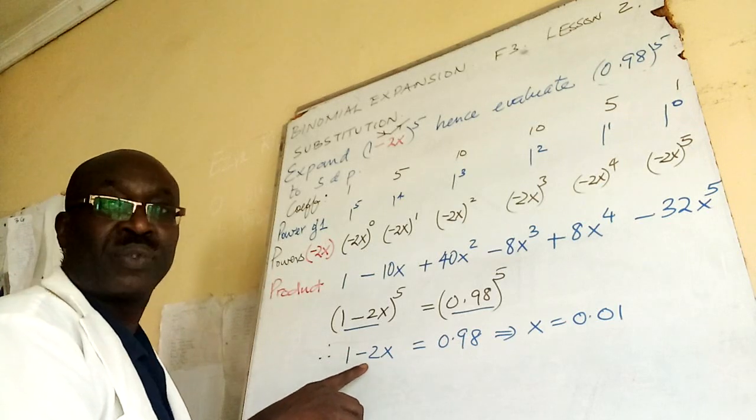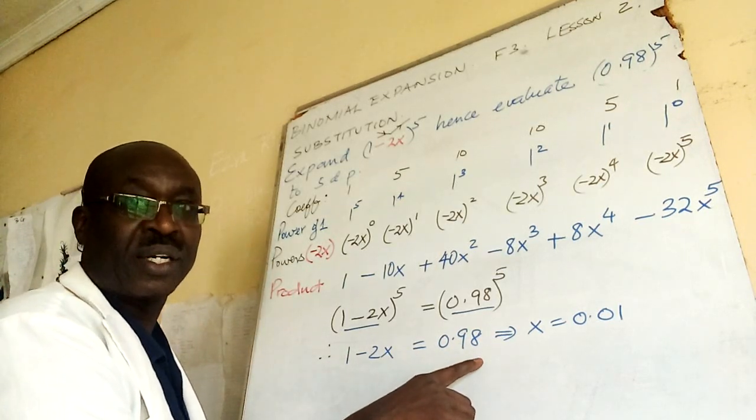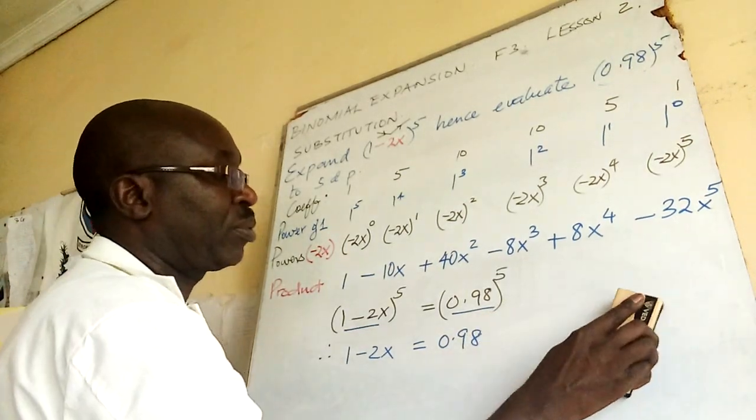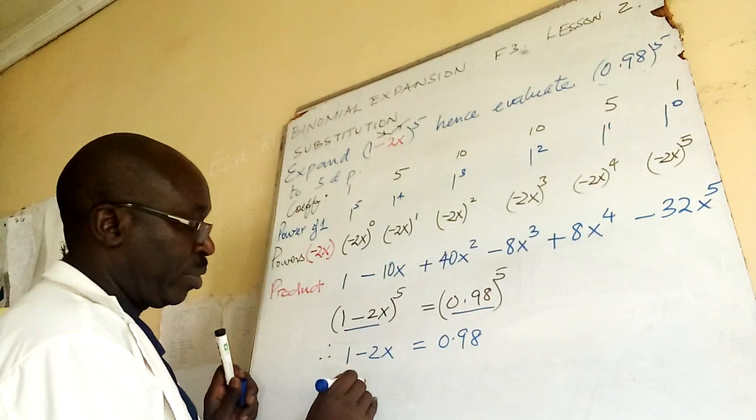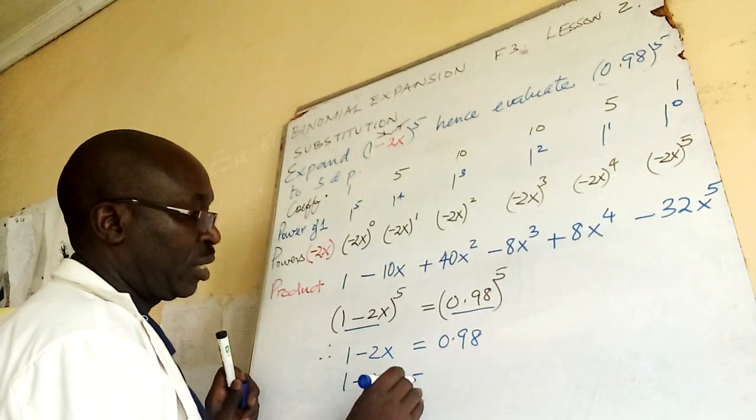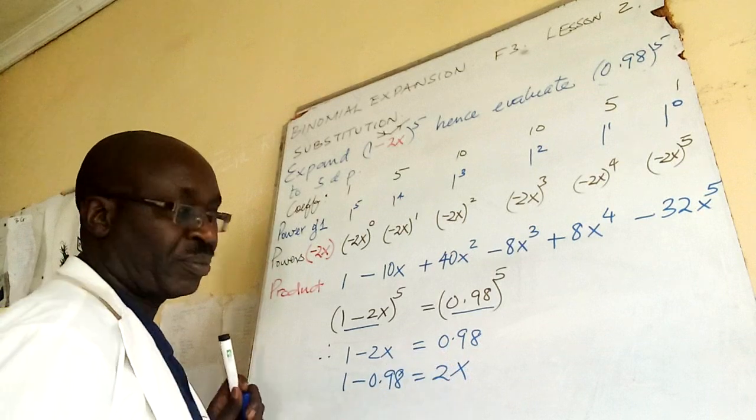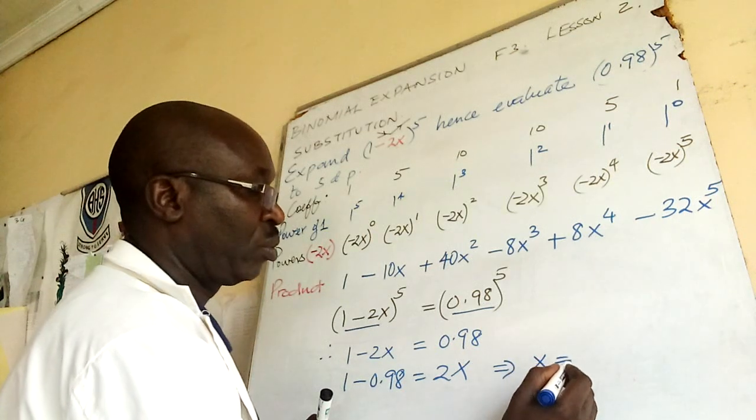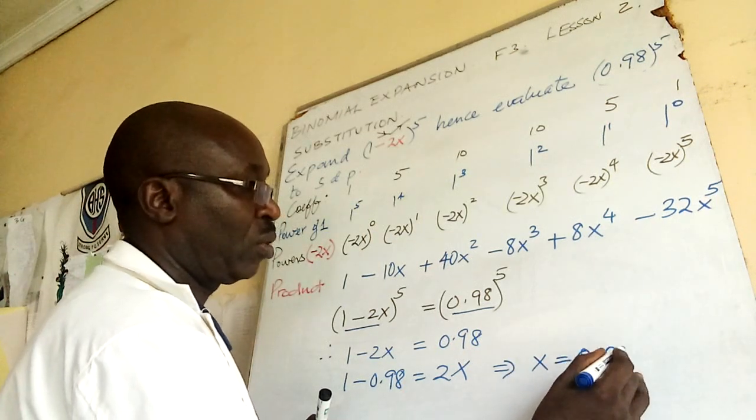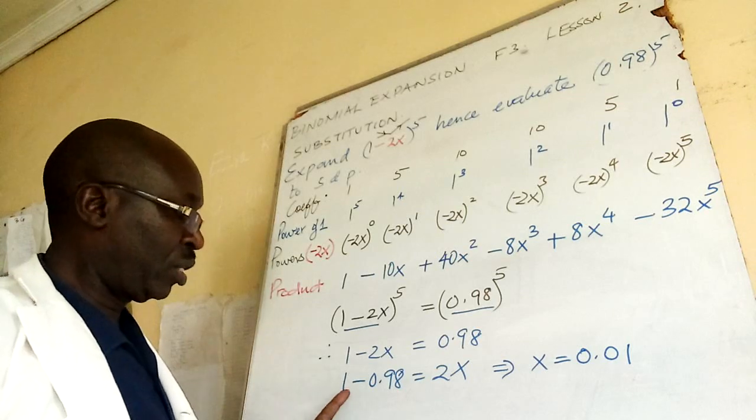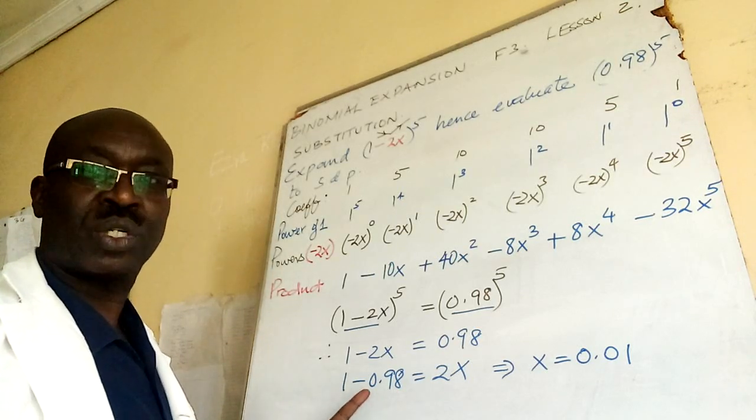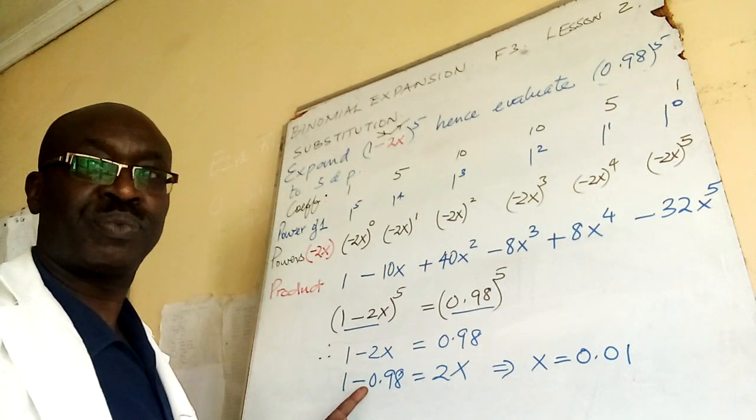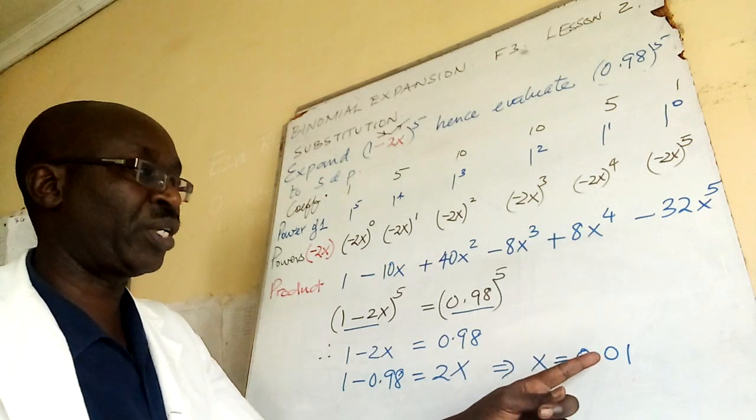You know this negative 2x will go this side. Can I do it for you step by step? 1 minus 0.98 is equal to 2x, then divide both sides by 2. What do you get? x is equal to 0.01, because this will be 0.02. If I divide by 2, I get 0.01.